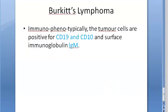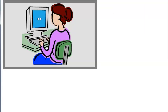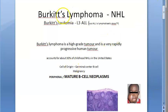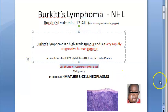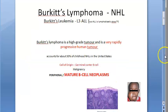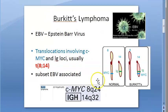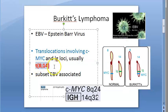Let's take a recap of Burkitt's lymphoma. Burkitt's lymphoma is a non-Hodgkin's lymphoma. It's a high-grade, rapidly progressive tumor. The cell of origin is the germinal center B cell — it is a mature B cell neoplasm. It can be caused by Epstein-Barr virus. The main chromosomal abnormality is the t(8;14) translocation, where the MYC gene jumps from chromosome 8 to chromosome 14.